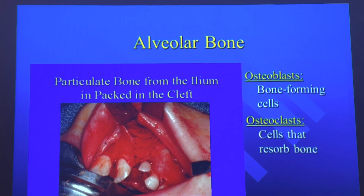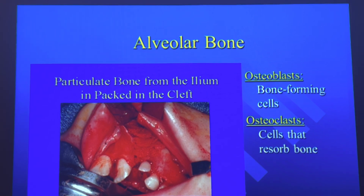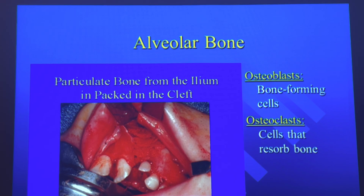Osteoblasts and osteoclasts — you're going to hear a lot about these in many chapters, especially orthodontics. Osteoblasts are bone-forming cells. If you're pushing a tooth through alveolar bone to straighten it, osteoclasts resorb the bone ahead of the tooth so it can continue moving forward. Once the tooth has moved, osteoblasts fill in the empty space where it once was.